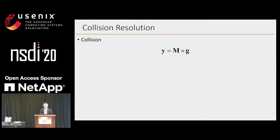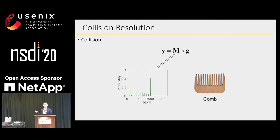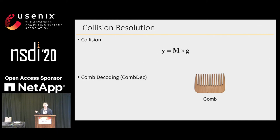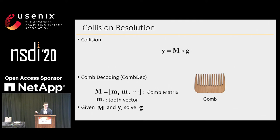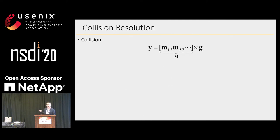Our method leverages the distribution of the NAV, which looks like a cob. So we call our method CobDeck. The capital M is the cob matrix, and each entry is a cob vector. The collision resolution problem now becomes resolving G, given M and Y. So the matrix M is very important in our system.